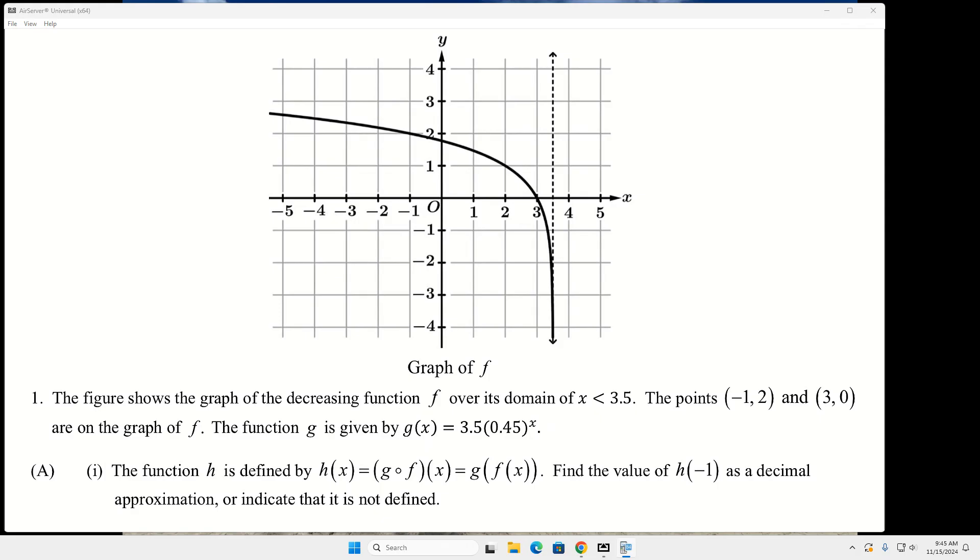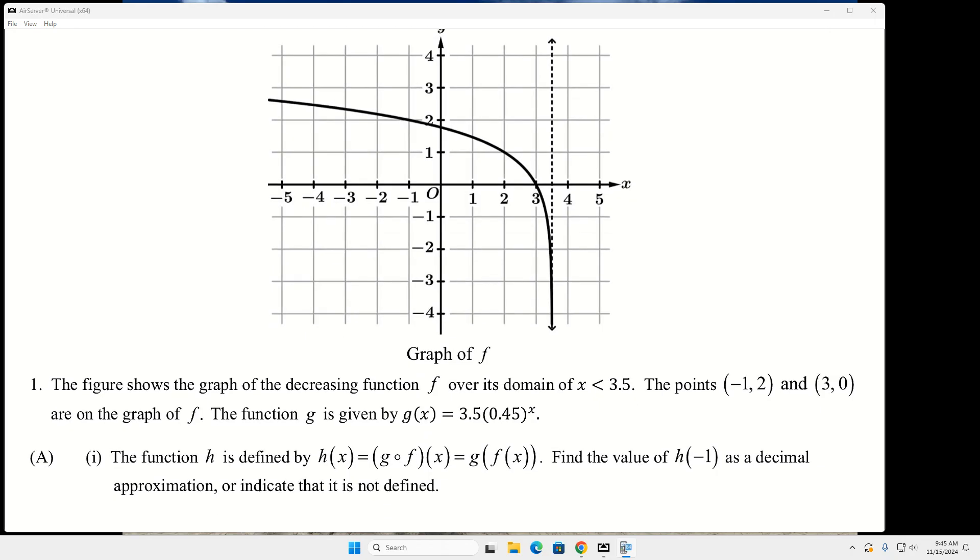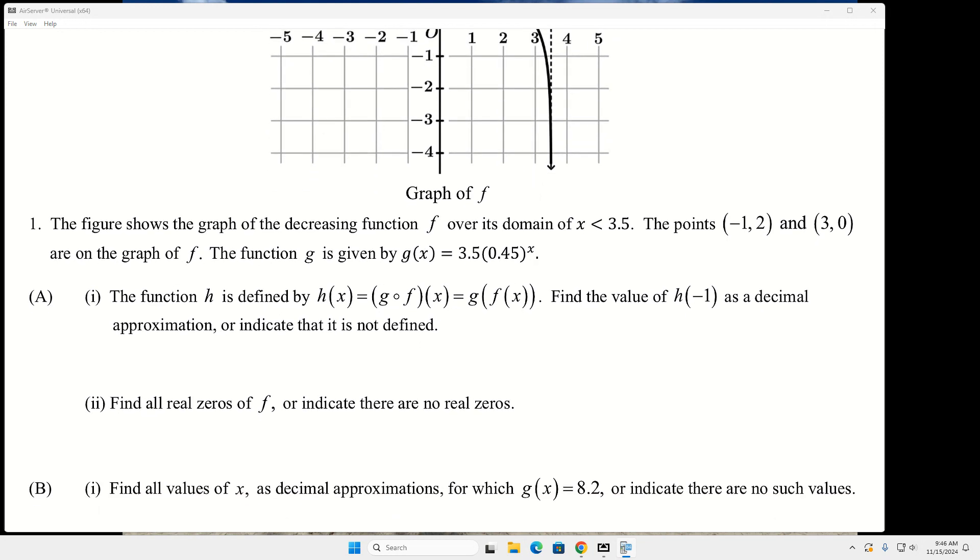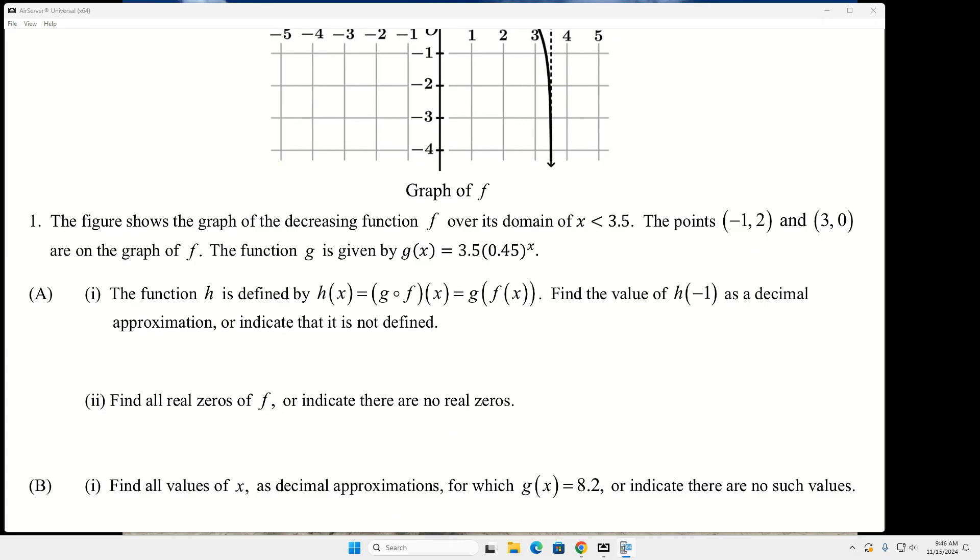So part A1 is always going to be some kind of composition. And so it tells you that h - we have f as the graph, we have g, that's the exponential function. g can be any kind of function, but for this test we're going to do exponential because that's what we've studied in this unit. And then there's h, that's another function, that is the composition of g and f. So it tells you that h is g of f of x, and they want you to find h of negative 1, which is g of f of negative 1.